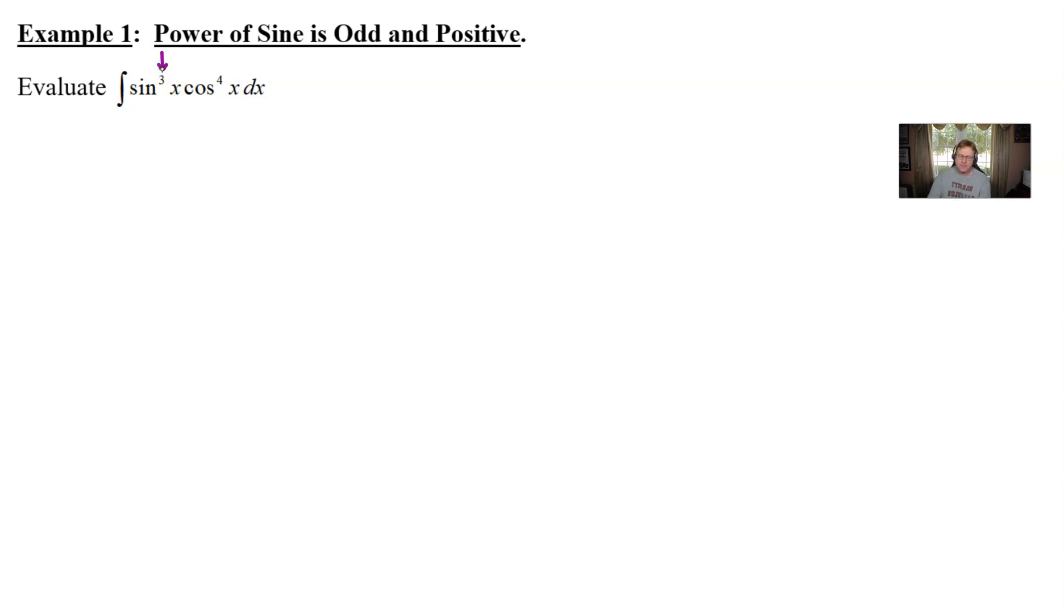And so what that means we want to peel off a sine of x so in other words we physically take one of our powers of sine which reduces that to a sine squared and what I'm going to do is write that power of sine towards the end here of the integrand I'm going to put it right at the end just before the differential dx.